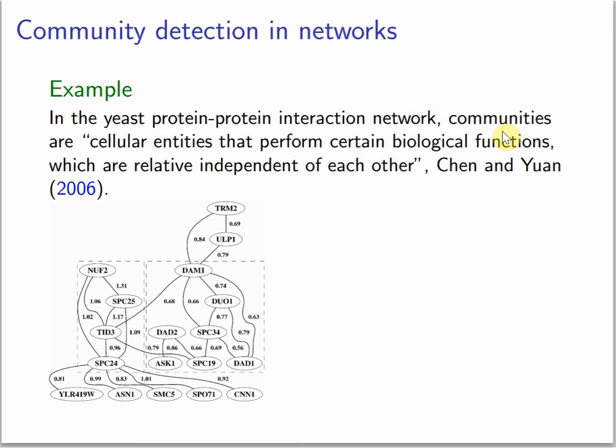Community detection is a very important phenomenon. Often in a network some nodes in the graph are more densely connected and they indicate some important function. They are often relatively independent of each other. For instance, in the yeast protein-protein interaction network, communities are cellular entities that perform certain biological functions which are relatively independent of each other.